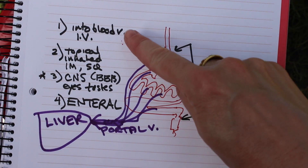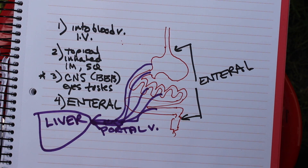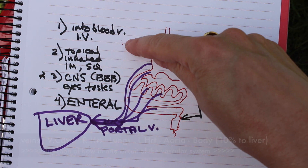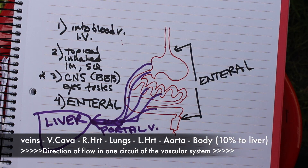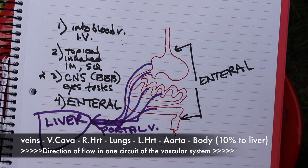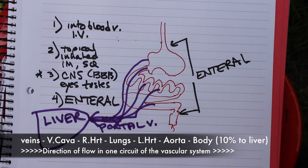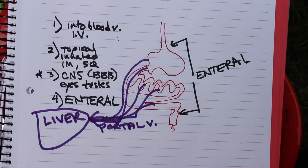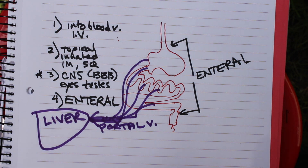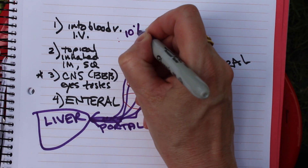If you put the drug directly into a blood vessel using an IV, that drug goes from the vein to the vena cava, then to the right heart, the lungs, the left heart, then the body. Let's say 10% of all the blood in your body goes to the liver. So with IV, 100% of the drug is absorbed, but only 10% of it goes to the liver on the first pass, because it first goes to the lungs, heart, aorta — some goes to your head, some to the rest of your body. Only about 10% goes to the liver. Let's use 10% to make the numbers easy.